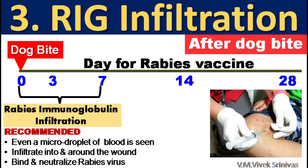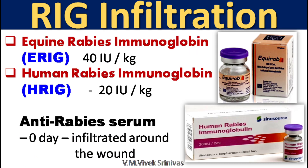Third, RIG infiltration — Rabies Immunoglobulin infiltration, also called anti-rabies serum. This is recommended even if a micro droplet of blood is noticed. Infiltration of rabies immunoglobulin is done into and around the wound on day 0 or within 7 days post-bite. Once infiltrated, the rabies immunoglobulin will bind to the virus and neutralize it at the site of bite. RIG preparations: equine rabies immunoglobulin ERIG at 40 international units per kg body weight, and human rabies immunoglobulin HRIG at 20 international units per kg body weight, infiltrated around the wound on day 0 or within 7 days post-bite.